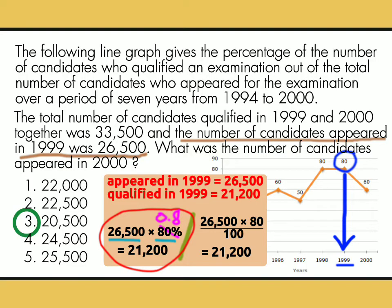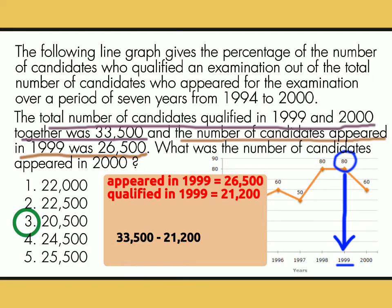Balik tayo sa statement. The total number of candidates qualified in 1999 and 2000 together was 33,500 — 33,500 daw ang total qualified sa taong 1999 at 2000. Pero nakuha na natin ang number of qualified sa 1999, itong 21,200. So para makuha natin ang number of qualified sa 2000, ay minus natin ang 33,500 at 21,200, and that is equal to 12,300.